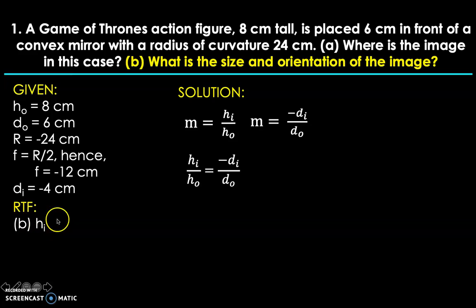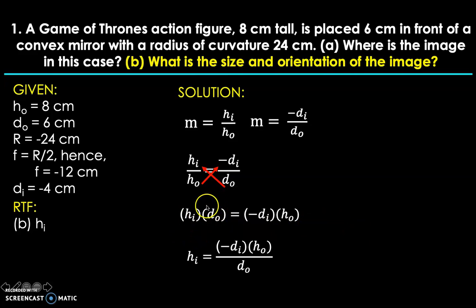Why will it work? Simply because the required to find is there, and the remaining variables are known as given in the problem. To make it linear, we're going to do cross multiplication. Of course, we want to isolate h_i. So if you do cross multiplication, you're going to have h_i times d_o equals negative d_i multiplied by h_o. Then divide both sides by d_o to cancel this. And this is what we're going to have.